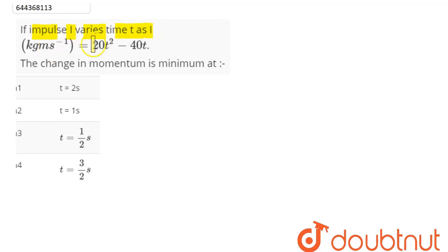The change in momentum is minimum at... So we have impulse given here as 20t² - 40t, and as we know, impulse is equal to change in momentum.